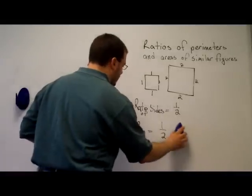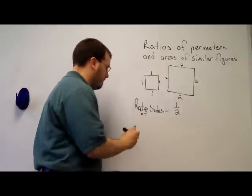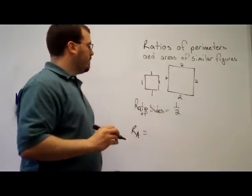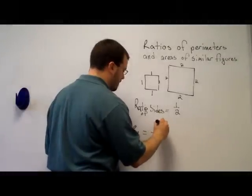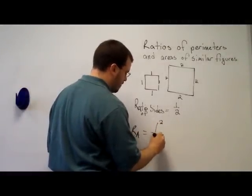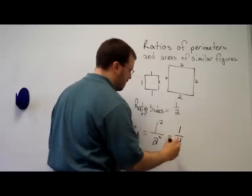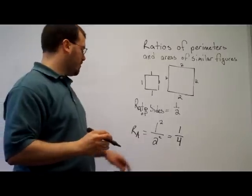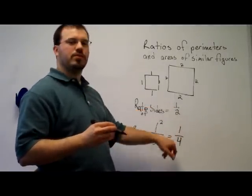Now, for ratios of areas, we could just calculate the areas of these figures again. 1 squared over 2 squared, which is equal to 1 over 4. Now, the ratio of areas is not the same as the ratio of sides.